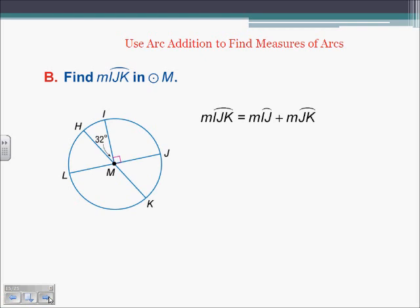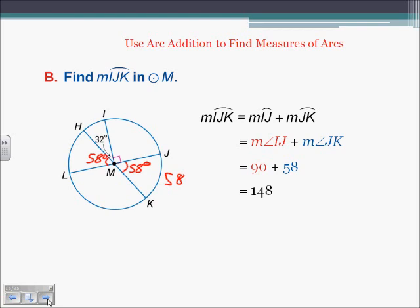To find the measure of arc IJK: arc IJK equals arc IJ plus arc JK. Arc IJ is 90 degrees, since arcs equal their corresponding central angles and that angle is 90. Arc JK is 58 degrees because it is a vertical angle to angle LMH, so those two are congruent — we already knew LMH was 58 degrees, so angle JMK must also be 58, and its corresponding arc is 58. So arc IJK equals 90 plus 58, which is 148.